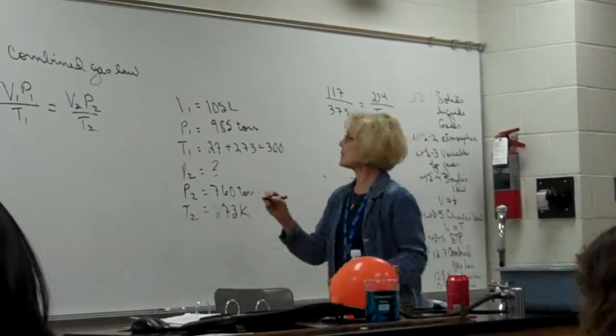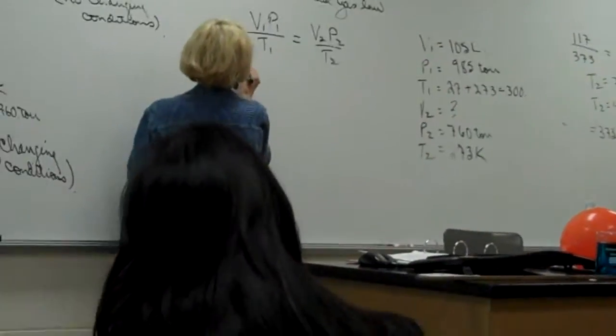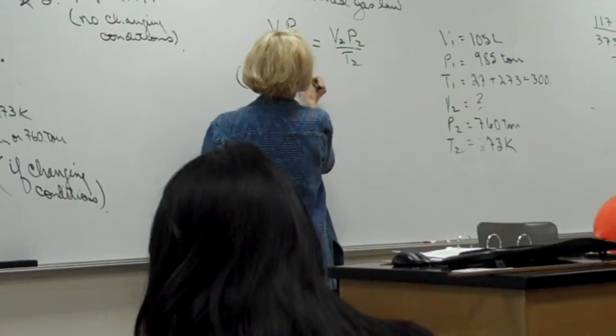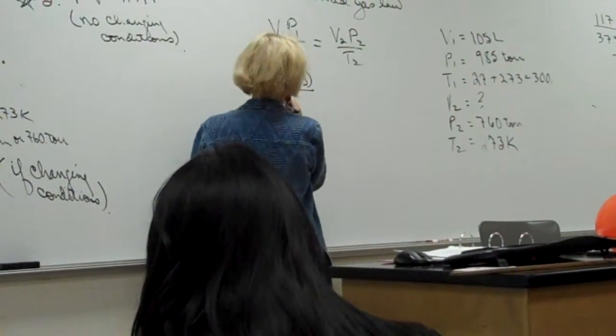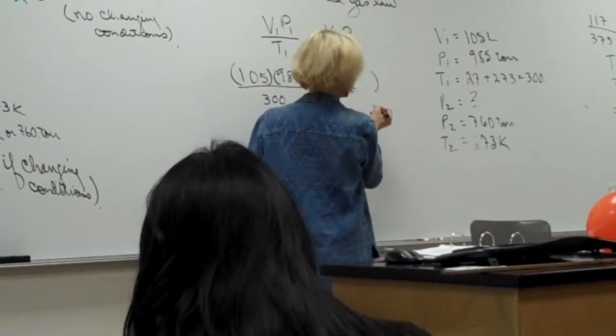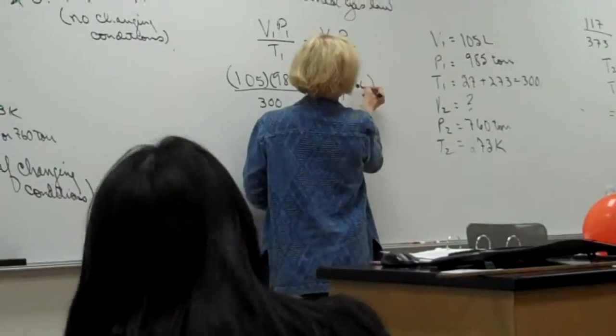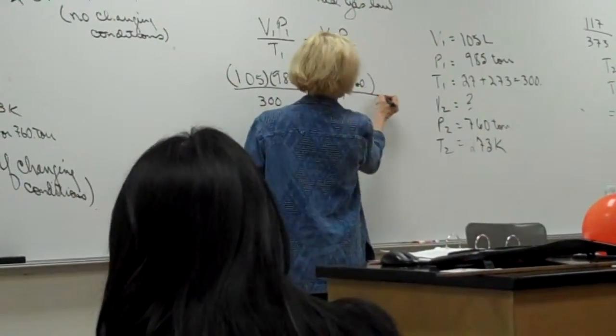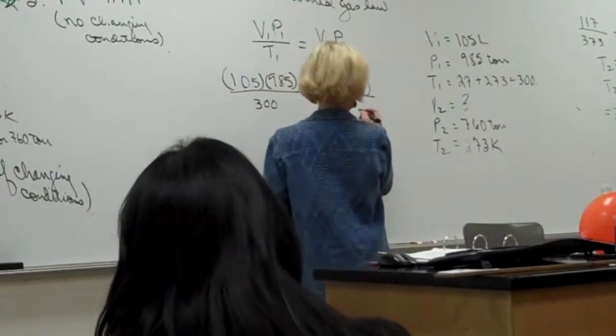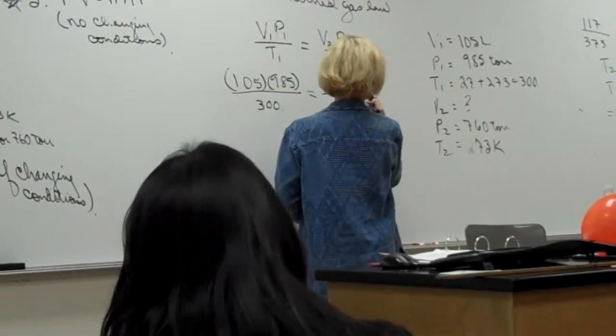We've got everything we need, so let's come over here. V1 is 105 and P1 is 985, T1 is 300, is equal to V2 is what I don't know. P2 is 760. We already did our internal check that our units were okay. T2 is 273.